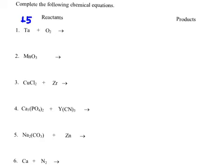Oxygen I look up is a minus 2. Remember, the trick is you always put the positive first — that'd be the Ta — and you put the negative second, that's O. Ta is plus 5, oxygen is minus 2. So what we do now is we swap and simplify. This 2 is going to come down here and this 5 is going to come down here. And that's my product: Ta₂O₅.